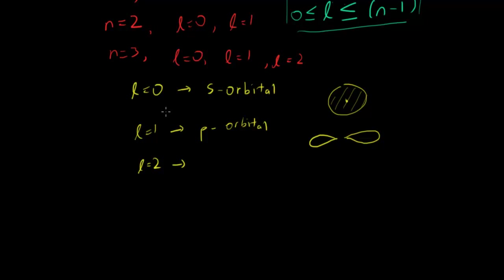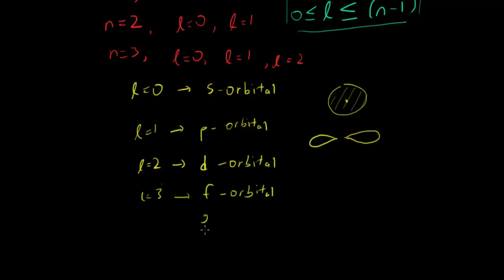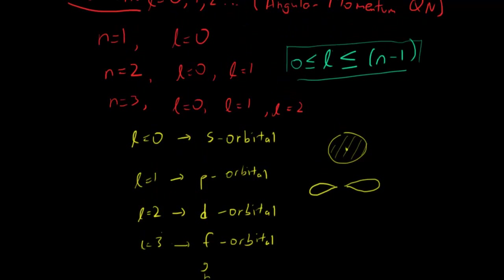L equals 2 is called the D orbital, which is similar to the P shape but with four lobes. L equals 3 is the F orbital, which stands for fundamental. So S stands for sharp, P for principal, D for diffuse, and F for fundamental. Then we have G, H, and beyond, where scientists just label them in alphabetical order — so L equals 4 is G, then H, then I, and so on.